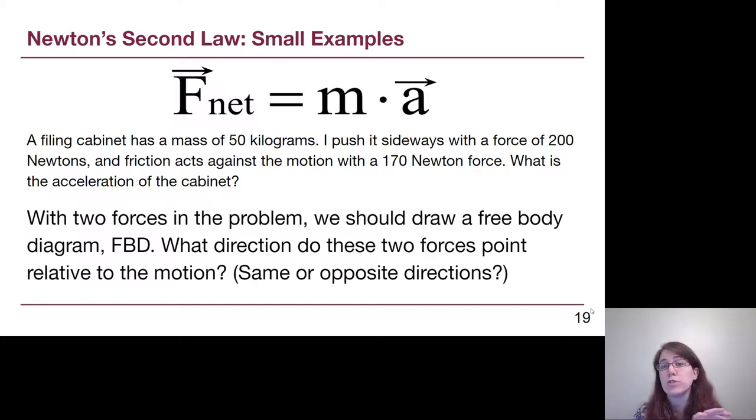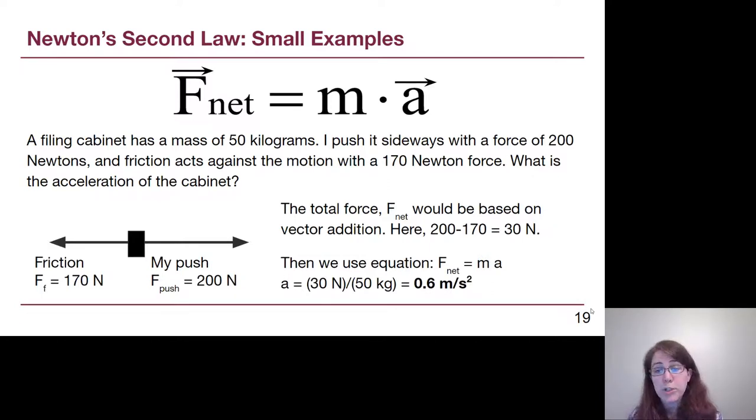Let's say that the filing cabinet is moving to the right on our page. We would want our push to also point to the right, and we would want friction to point in the opposite direction, 170 newtons. So the idea of vector addition is that because these are pointing in opposite directions, we have to subtract one from the other. Opposite directions means opposite sign. Same direction means same sign. So the total force, F net, would be 200 minus 170. That would be 30 newtons here. And then using our equation, because it's going to show up every single example we do in chapter 4, F net equals ma, to solve for the unknown acceleration, we would divide both sides by that 50 kilogram mass, and we get an acceleration of 0.6 meters per second squared.